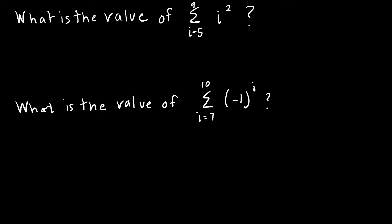So all I'm going to do to find this summation from 5 to 9 of i squared is start at 5, increase by 1, increase by 1, increase by 1, and stop when I get to 9.